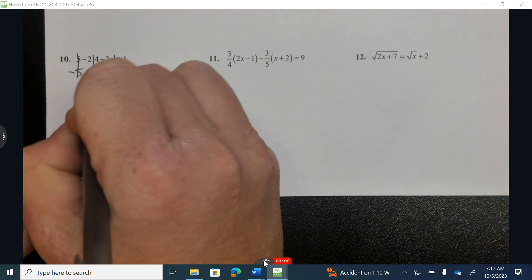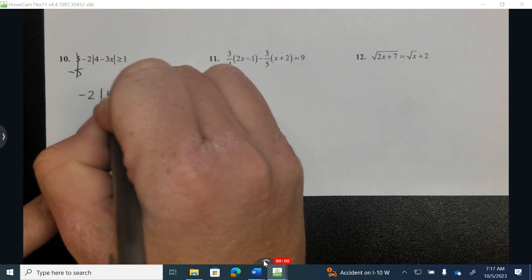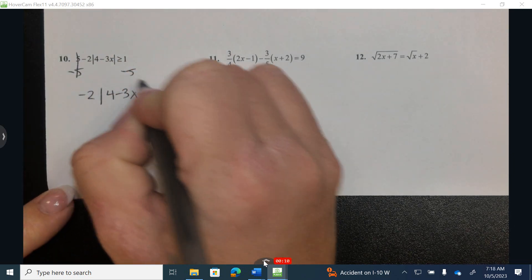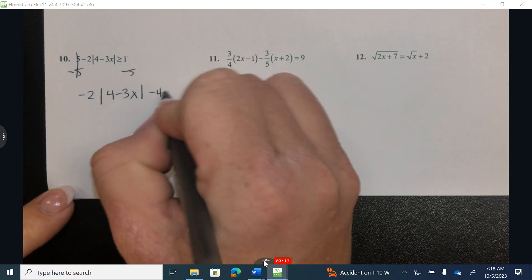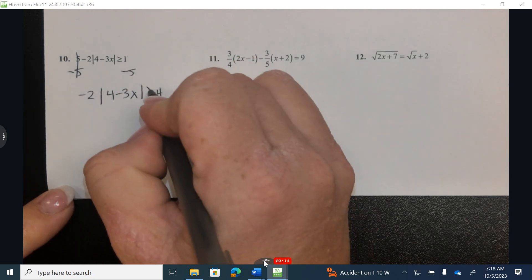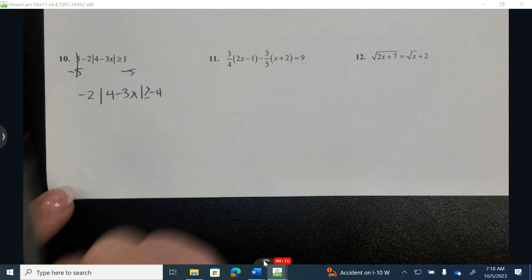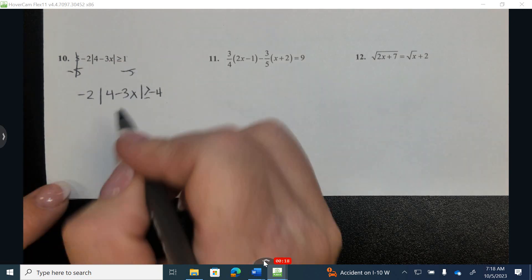Subtracting 5 to the left and right, I have negative 2 times the absolute value of 4 minus 3x. We're only going to flip the symbol when we multiply or divide by a negative.